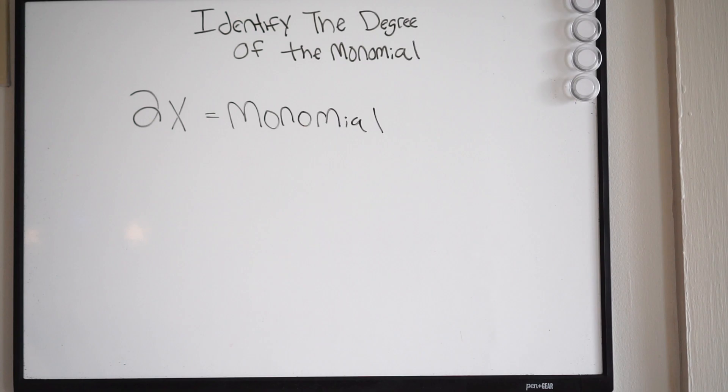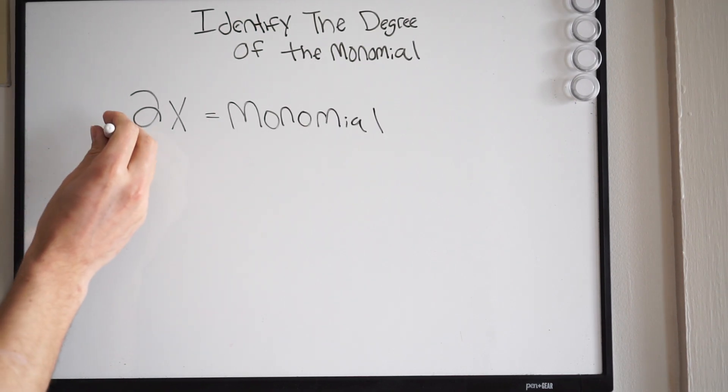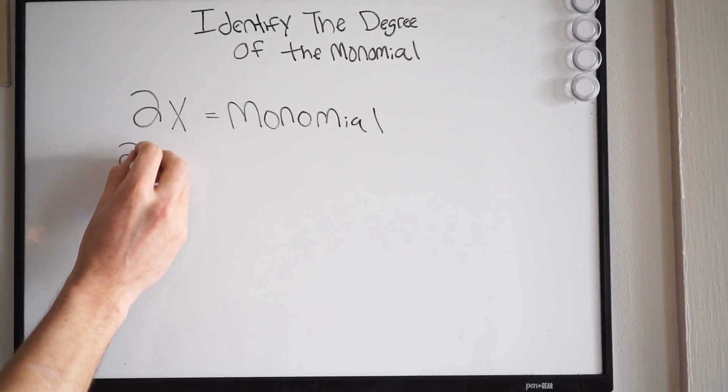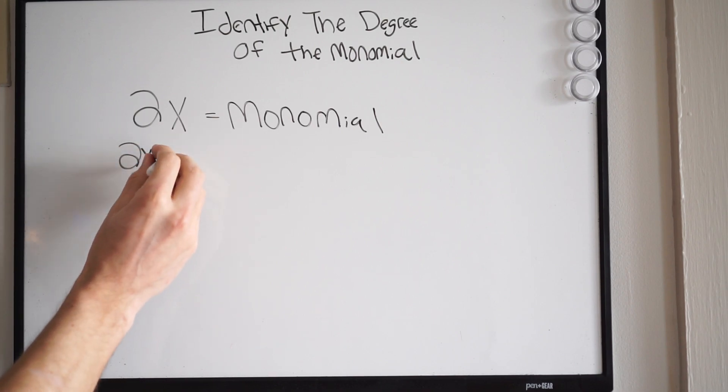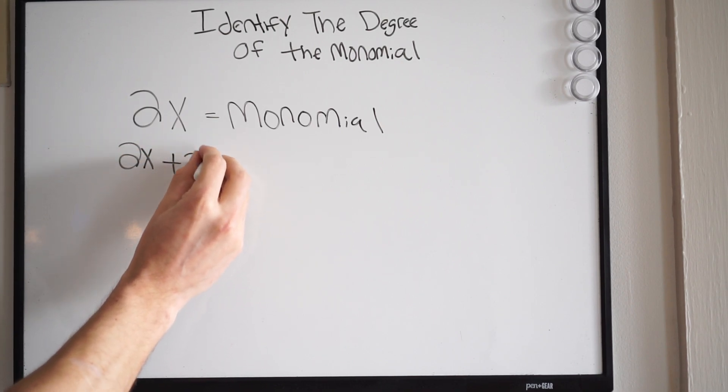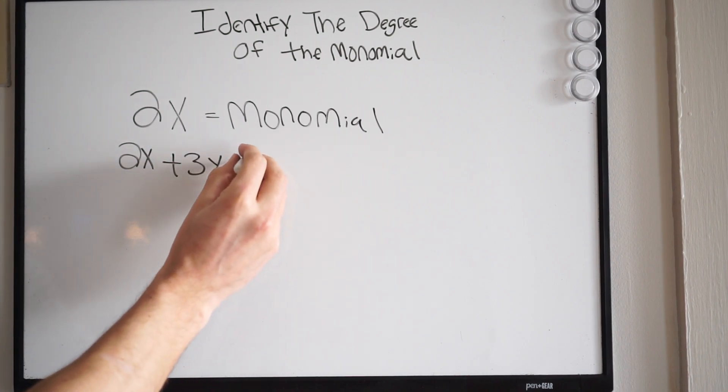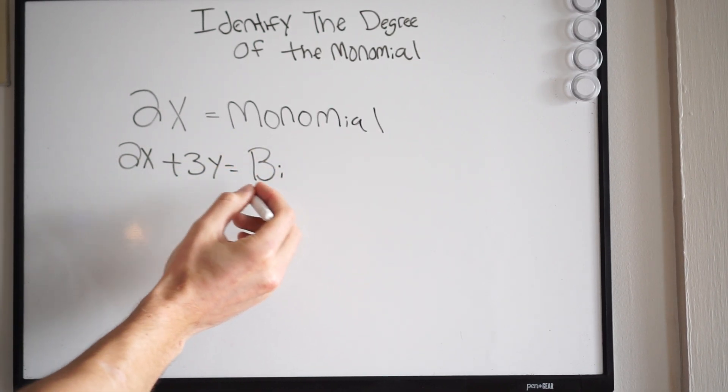Okay, well if we have two terms, so let's say we have 2x plus 3y. Well, this would be considered a binomial.